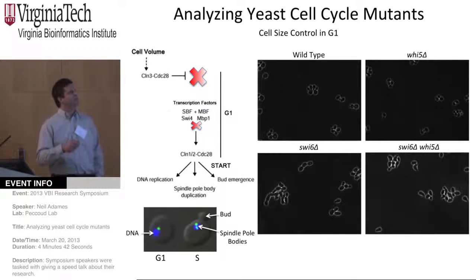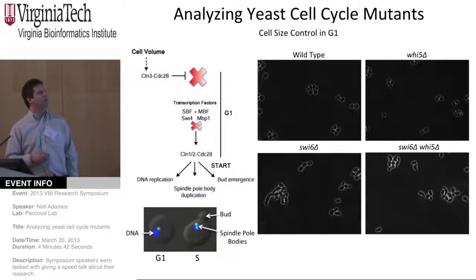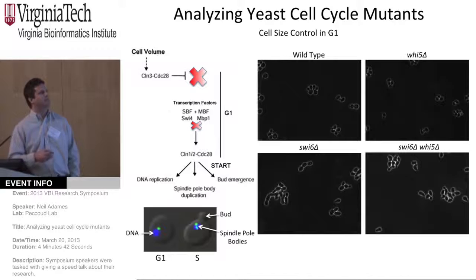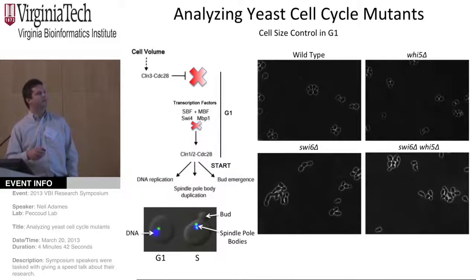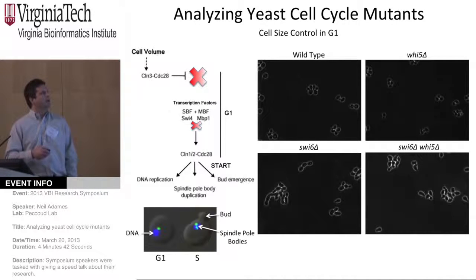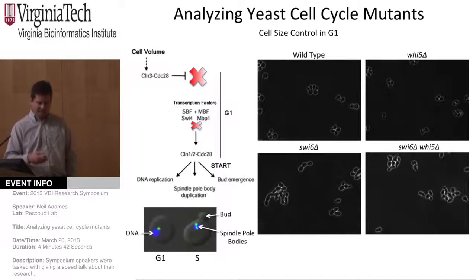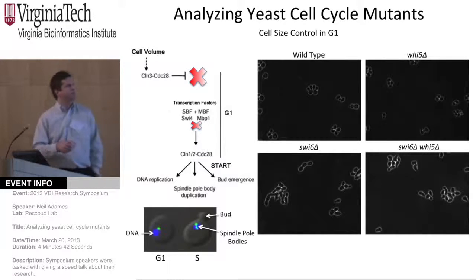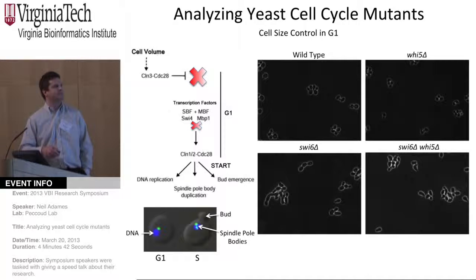The model predicts that the Whiskey5 mutant should be small. This has been well established in the public database, and in fact they do look smaller. If you do a more in-depth analysis, it's quite obvious that the cell distributions are on the small side. On the other hand, something like a SWI6 mutant, which is required for progression through G1S, is on the large size and is predicted to be large — and that's in fact what we see.